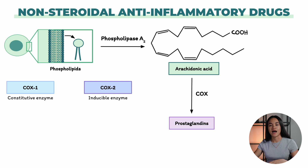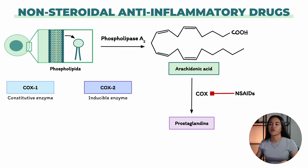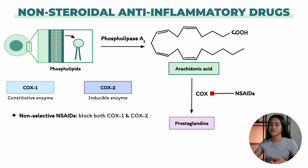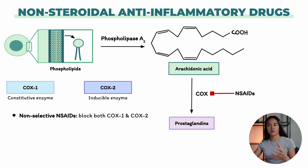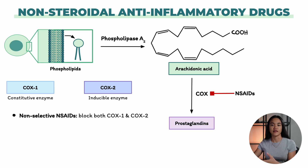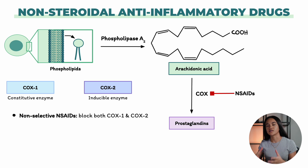In the previous lecture, we covered what happens in acute inflammation. The medications that target these enzymes are called non-steroidal anti-inflammatory drugs. There are two main types of NSAIDs. We have non-selective NSAIDs, which block both COX-1 and COX-2, meaning they reduce prostaglandins involved in inflammation, but also those that protect the stomach and regulate blood flow. This dual action is effective, but it can cause side effects like stomach irritation.